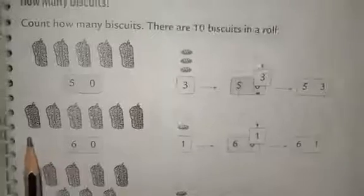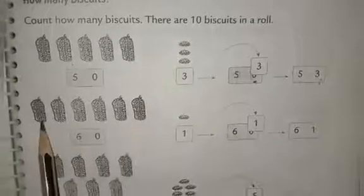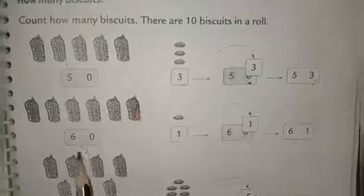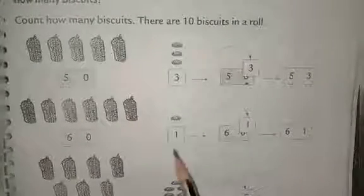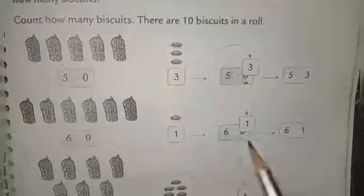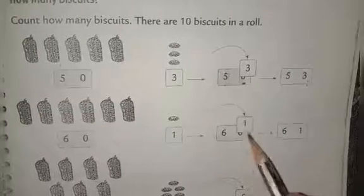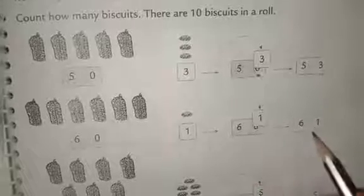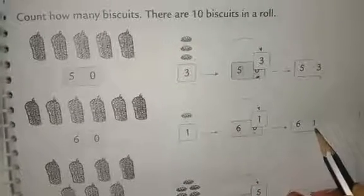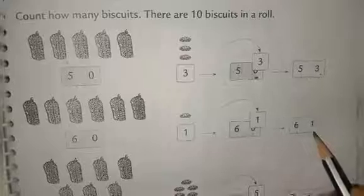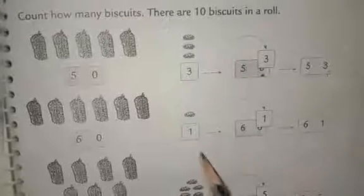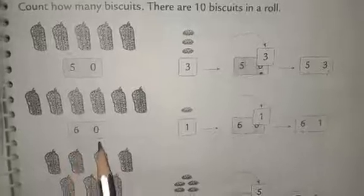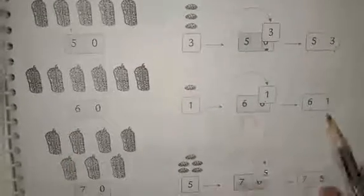Then the next example. How many rolls here? 1, 2, 3, 4, 5, and 6 — that's 6 tens, which is 60. And there is 1 loose biscuit. So the number becomes 61. In 61, the 1 is in the 1's place and the 6 is in the 10's place, meaning 6 tens and 1 one — that means 61.